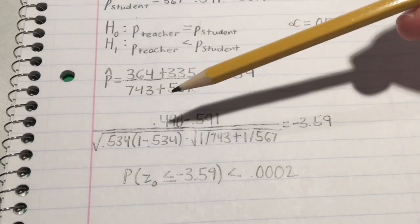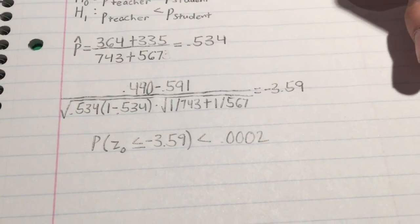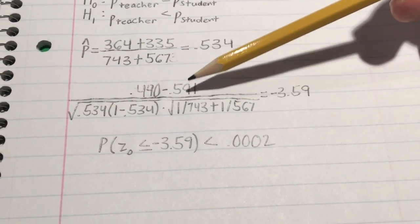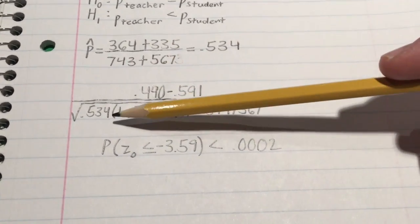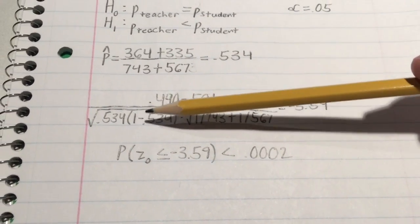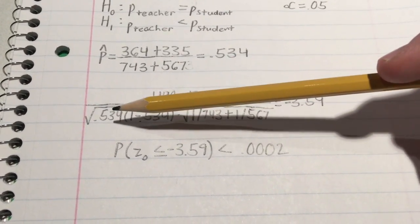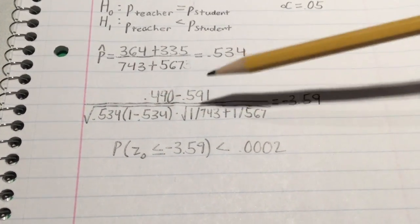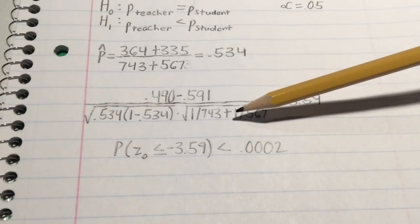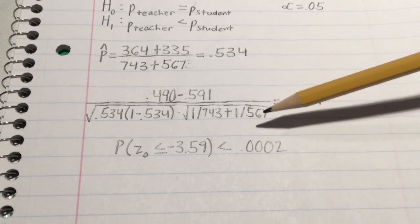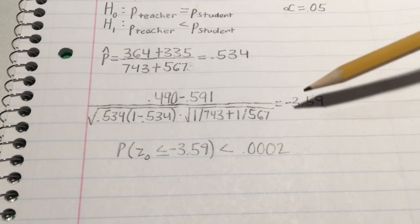Now for our test statistic, since we have the data, we would simply substitute it in: 0.490 being our sample proportion for the teachers minus the sample proportion of students, 0.591. Then we would substitute 0.534, being our pooled estimate, times 1 minus 0.534, square root, and the entire equation multiplied by 1 over the population of the teacher-centered model added to 1 over the student-centered model.